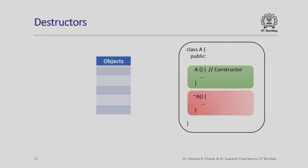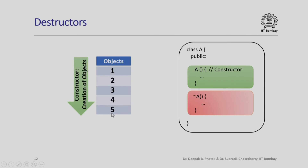We have seen how constructors get invoked when instantiating an object of a derived class. What happens with destructors? The general rule is: if a class is derived from another class, which is derived from another, and so on, the constructors are invoked starting from the topmost base class first, then each successive derived class. The destructors are invoked in exactly the opposite sequence — the destructor for the class lowest in the hierarchy is called first, then moving upward through the base classes.